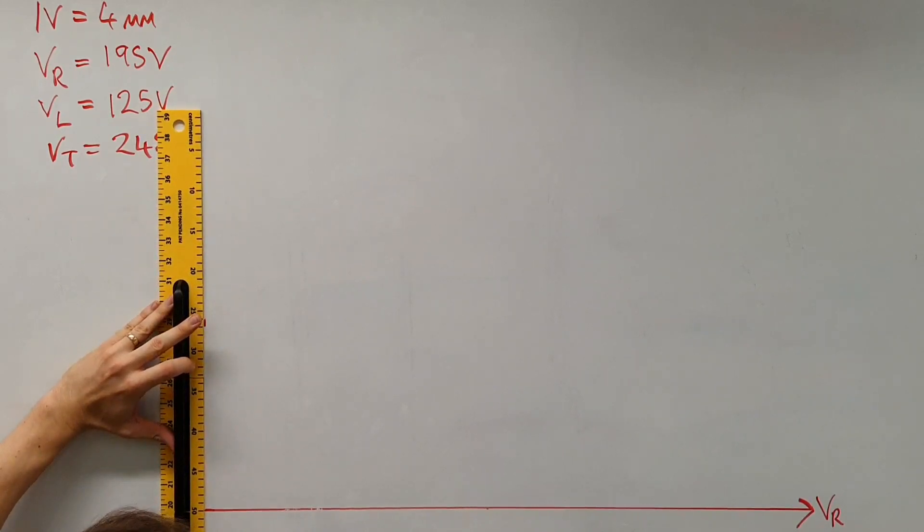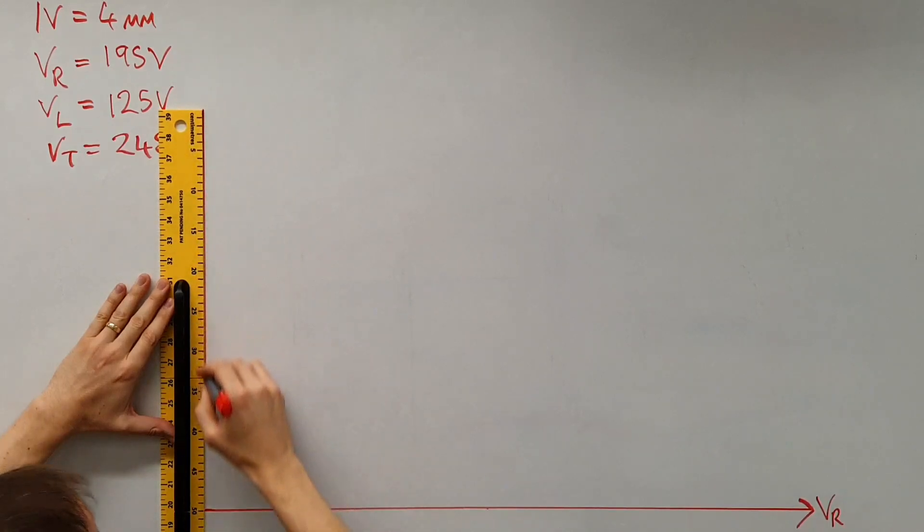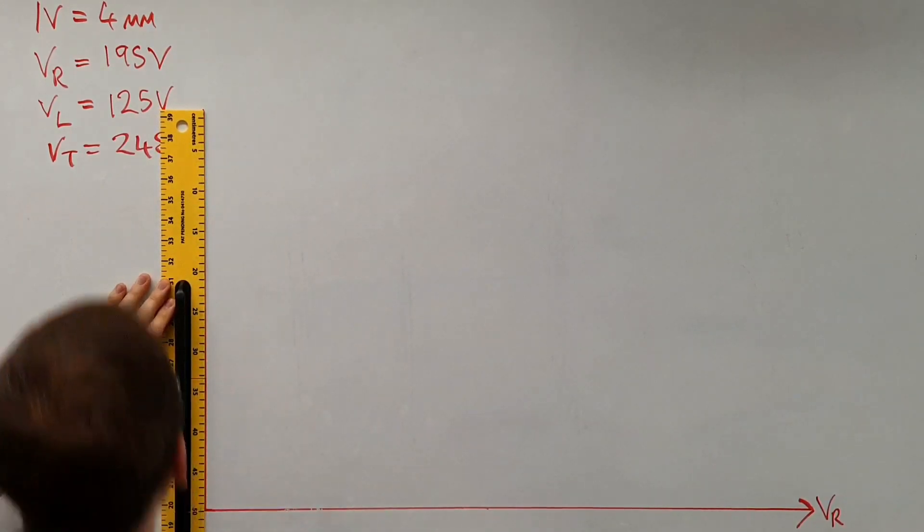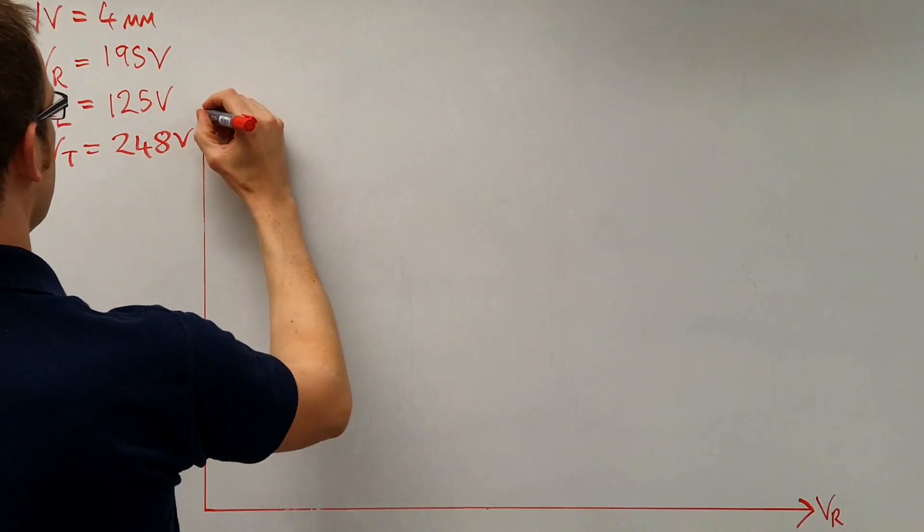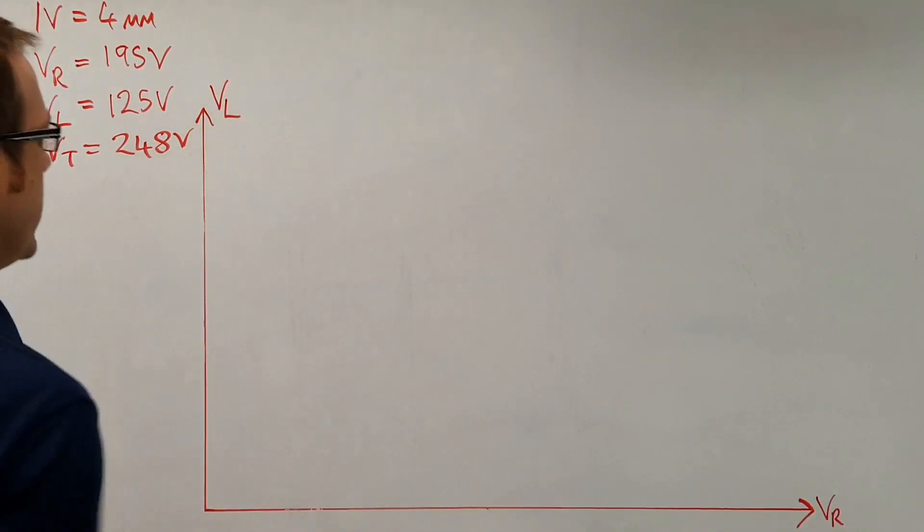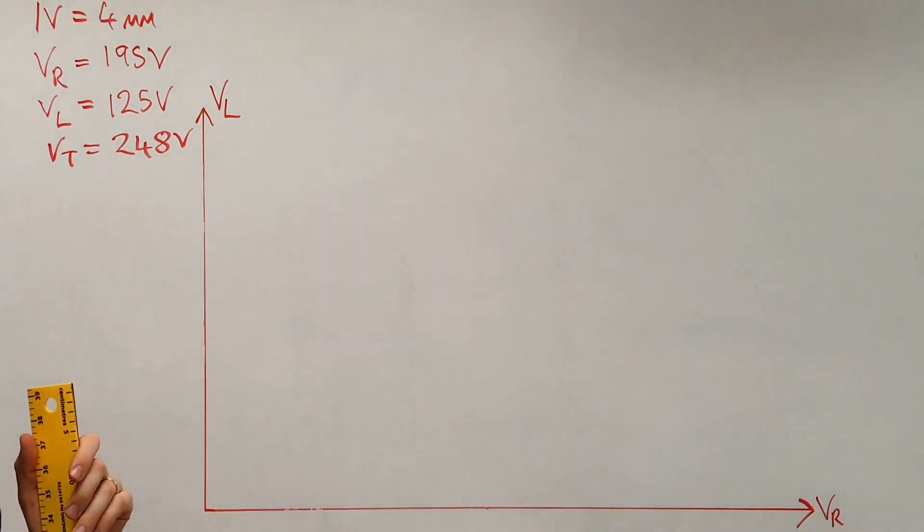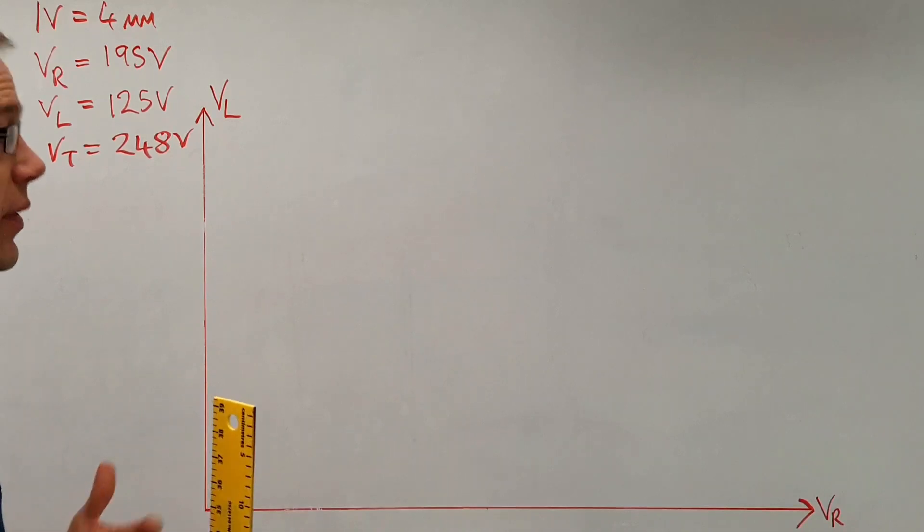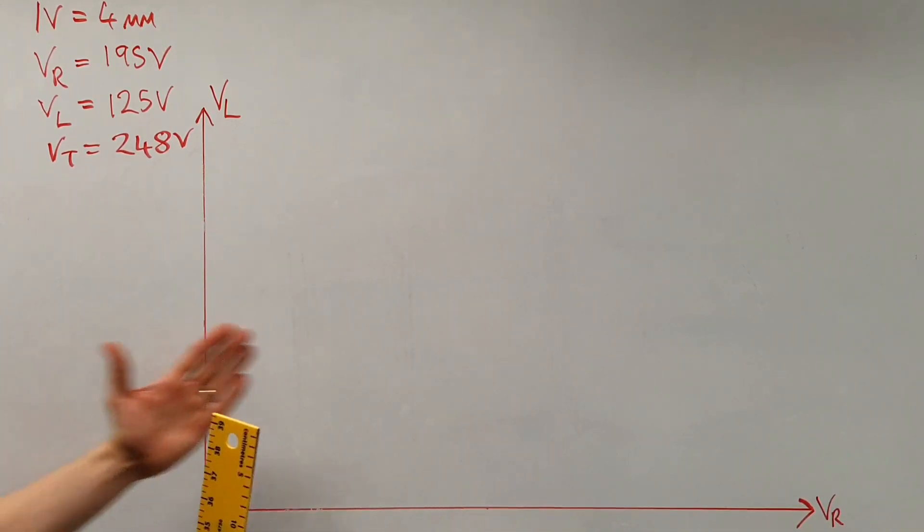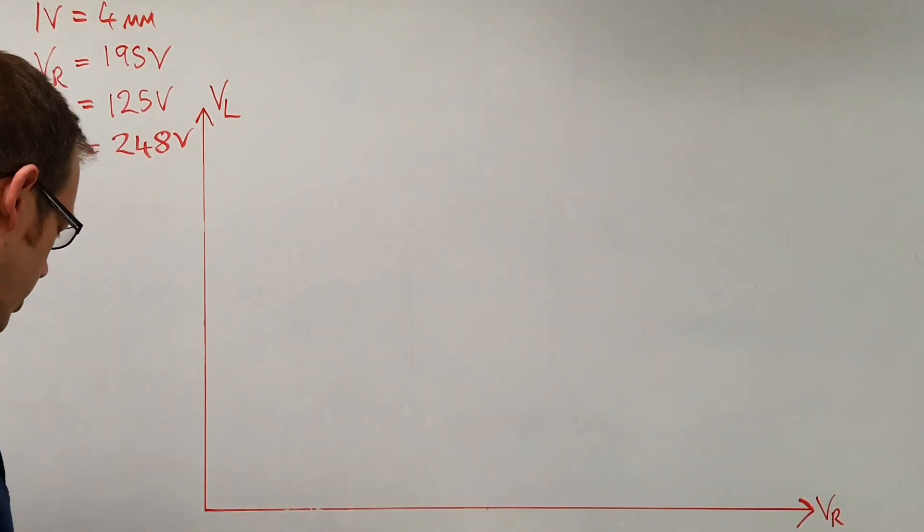And just managed to miss my writing there which pleases me greatly. So there we go, that is now 50 centimeters long and that is our inductive voltage and that represents a value of 125 volts. So now in the previous part of this video we saw that we can combine these two lines together to find our supply voltage, so let's see how close we get here.